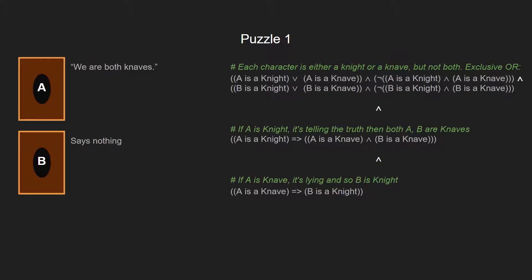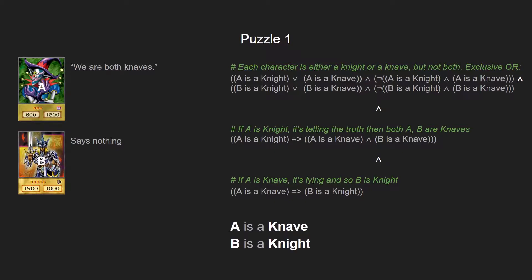Puzzle number one includes two characters, so we have character A and character B. The first character says "we are both Knaves," while the second character says nothing. We again include the main rule of the game with the exclusive OR for each of the characters, then translate the sentence of the first character. If A is a Knight, it is telling the truth and both A and B are Knaves — so we use the implication. And if A is a Knave, it is lying and so they are not both Knaves, meaning B is a Knight — we use the implication again. If we run the program, we get that A is a Knave and B is a Knight.